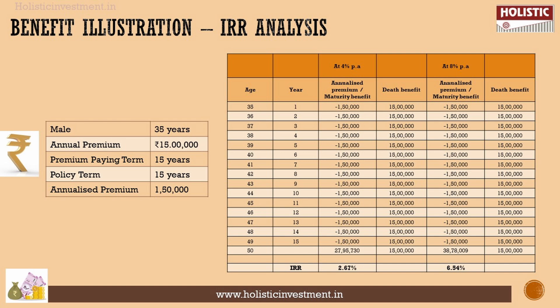We will calculate the maturity benefit. This is a market-linked product, so 4% is the worst-case scenario and 8% is the best-case scenario — these are not guaranteed returns, just examples. In the worst-case scenario at 4%, the maturity value will be 27 lakhs, giving an IRR of 2.67%. This 2.67% is equivalent to a savings bank account rate of interest — so even taking on this risk, you would only get savings account-level returns.